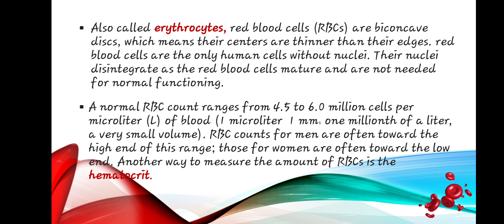Red blood cells, also called erythrocytes or RBCs, are biconcave discs—their centers are thinner than their edges. Red blood cells are the only human cells without nuclei; their nuclei disintegrate as the cells mature. A normal RBC count ranges from 4.5 to 6.0 million cells per microliter of blood. RBC counts for men are often toward the high end of this range, while those for women are often toward the low end.